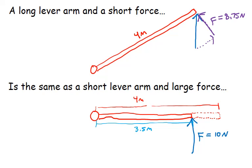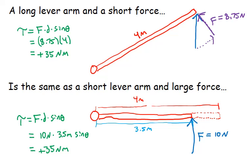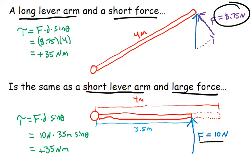Let's apply values: say the original force was 10 N and the perpendicular component is 8.75 N. For the top approach, torque equals force times displacement times sine theta — using four meters and 8.75 N gives a torque of positive 35 newton-meters. For the bottom approach, we use the full 10 N but only the effective lever arm of 3.5 meters: 10 times 3.5 also gives 35 Nm. Both methods yield the same torque — this is the approach we'll use today.